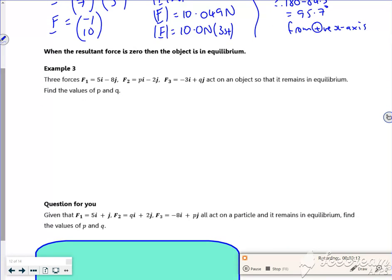So there's a third example here. I might as well do that one, because I can be quick with it. So I've got F1, which is (5, -8). I've got F2, which is (P, -2). And I've got F3, which is (-3, Q). And it's in equilibrium, isn't it? Right, so let's have a look then. So if I write down my resultant force, it is F1 plus F2 plus F3.